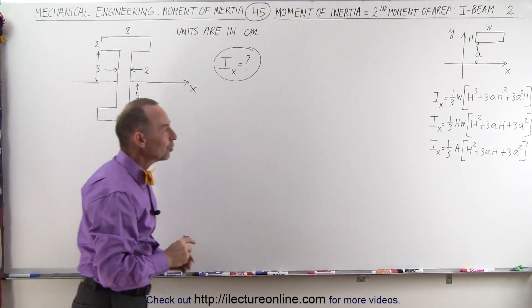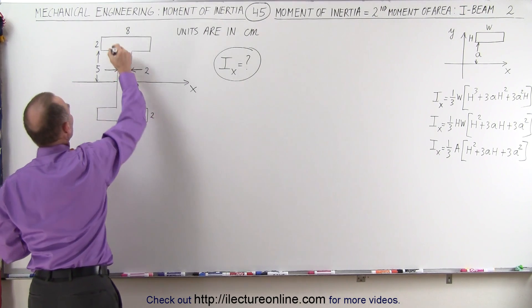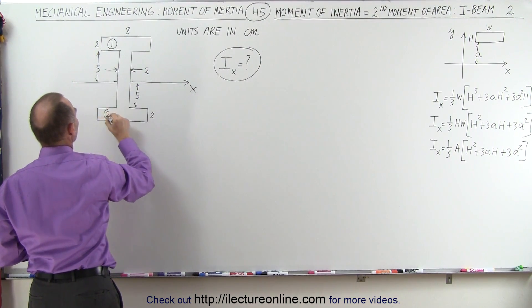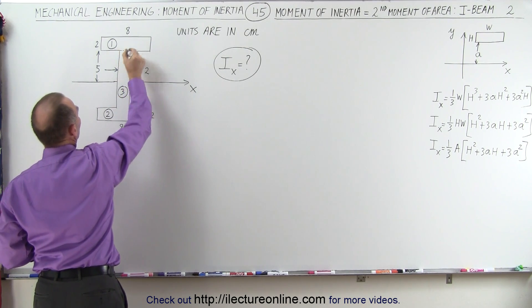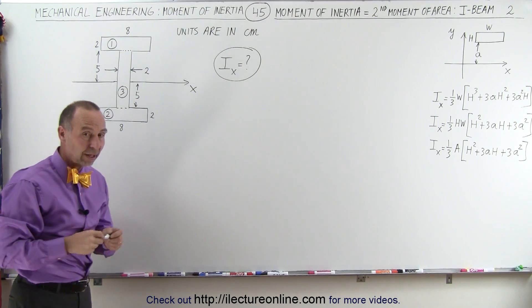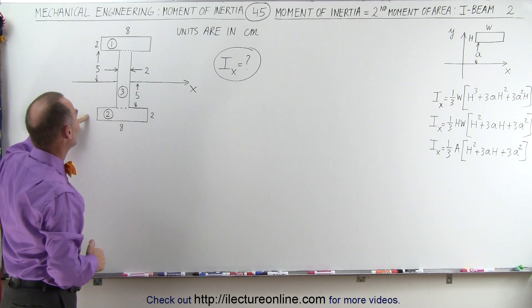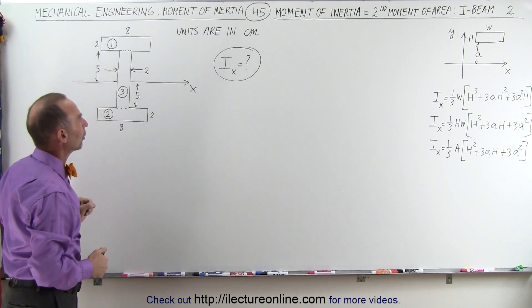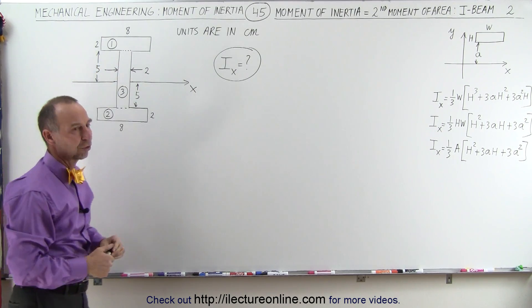Now we're going to find the total moment of inertia by summing the moment of inertia of each section: section 1, section 2, and section 3. There is perfect symmetry between sections 1 and 2, so we can simply double the moment of inertia of one of those and add it to the moment of inertia for section 3.